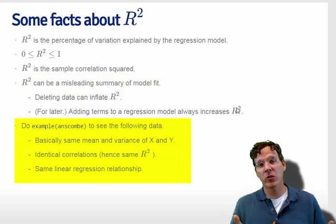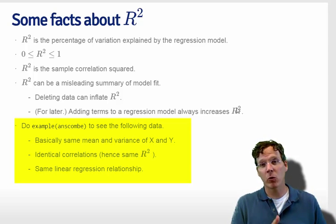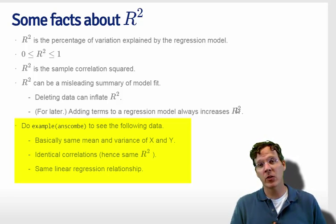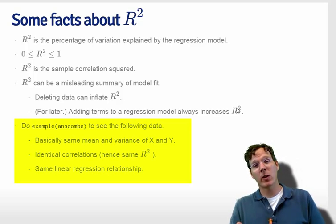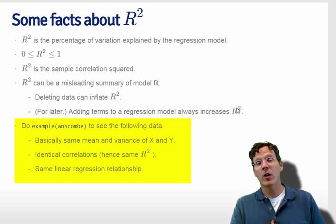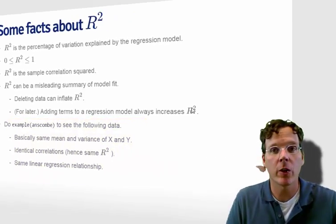Anscombe created a particularly stark example of a bunch of data sets with equivalent r squared, equivalent mean and variance in the x's and the y's, and identical regression relationships. But when you look at the scatter plots, you can see that the fit has very different meanings in each of the cases. So let's look at the outcome from that example Anscombe and see what it shows.